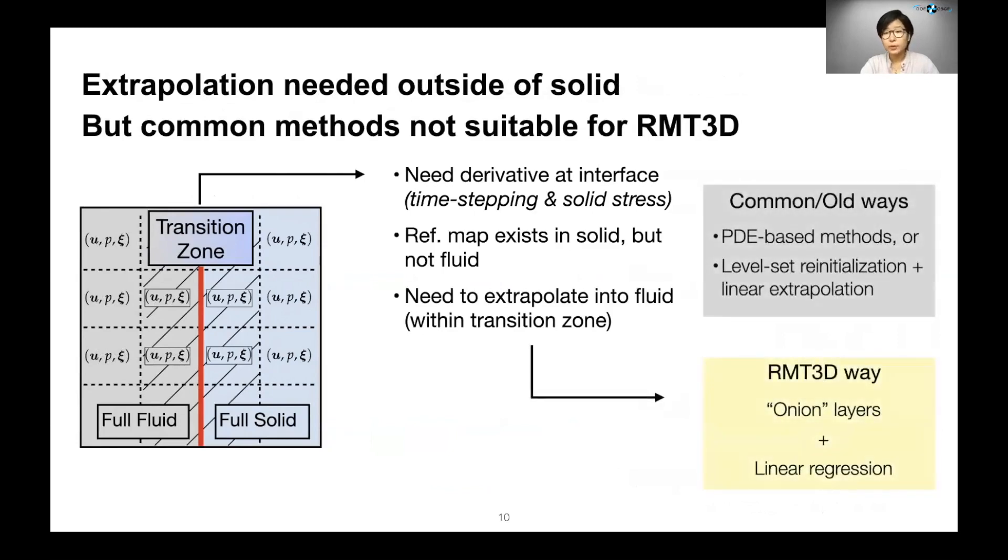There are some common ways of doing extrapolation. One of the common ways of extrapolating a field is solving a PDE associated with the field to stationary state. In the previous iteration of reference map technique in 2D, we also use a combination of re-initialization of level set and linear regression.